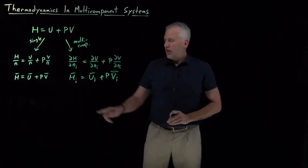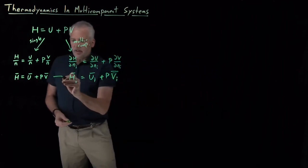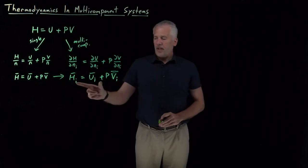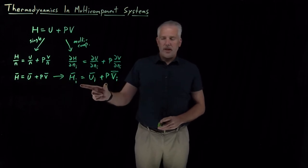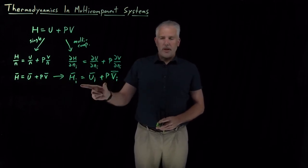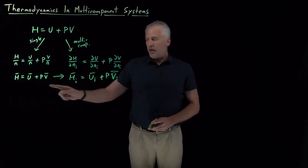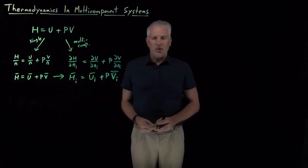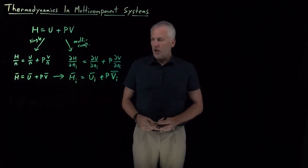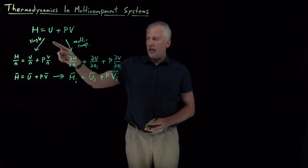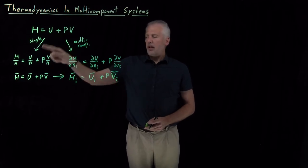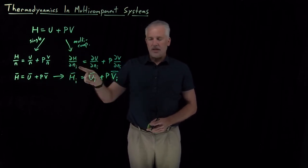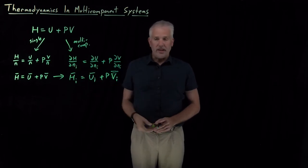So if we want to take a single component thermodynamic result and change it into a multicomponent thermodynamic result, very often all we have to do is change the molar quantities into partial molar quantities, although it helps to step back and think about how we got to that expression — we got the intensive version by dividing, but we get the multicomponent expression by differentiating.